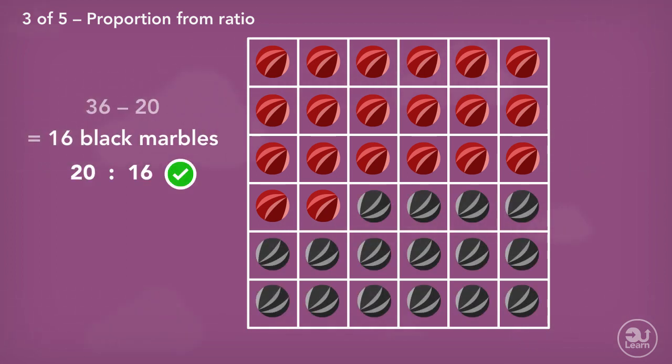Like in the previous example, we know the total equal parts. Out of the 36 parts, 20 are red, therefore 16 must be black. The proportion of black marbles as a fraction is 16 out of 36. To represent as a percentage, 16 is divided by the total parts 36, then multiplied by 100, which is 44.44, rounded to two decimal places.